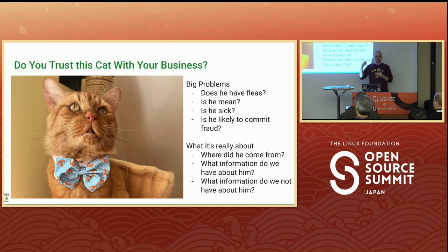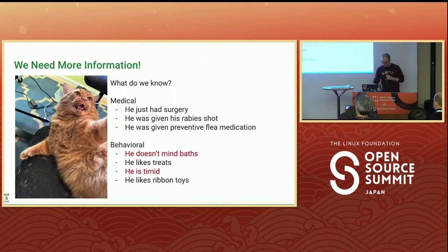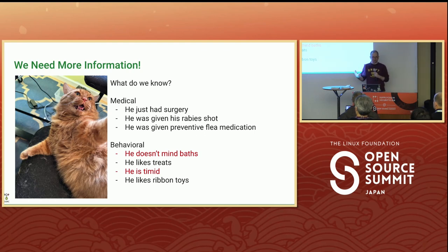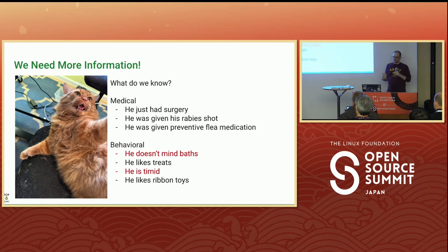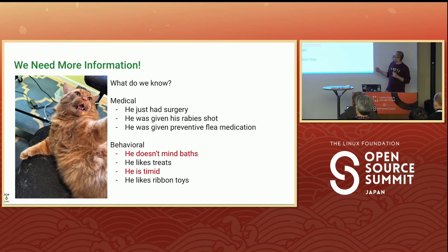What do we not know and want to know? We need more information. From his medical history, he had just had surgery, was given his rabies shot, and was given preventive flea medication. When I adopted this cat earlier this year, we were told based on his behavioral history that he doesn't mind baths, he likes treats, he is timid, and he likes ribbon toys. The stuff in red turned out not to be true.